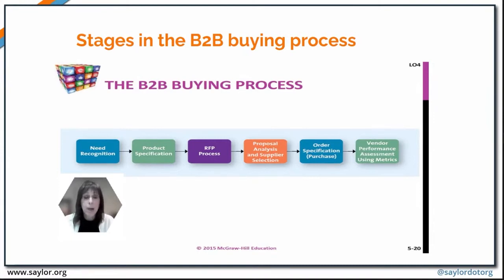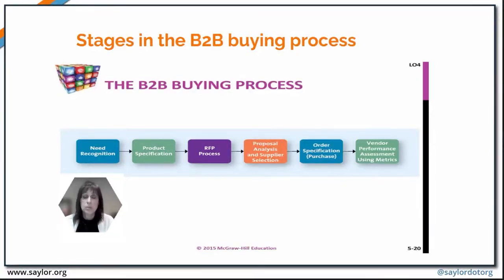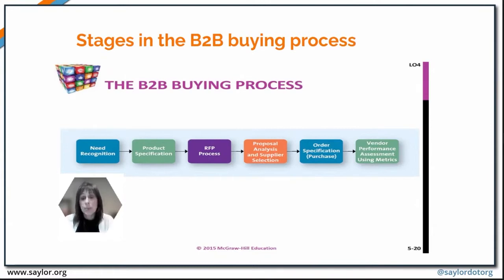A company will then look at potential suppliers, which results in an RFP — Request for Proposal — process. When a company is getting ready to make a purchase, they go to different potential suppliers and ask them for a proposal on what the company is looking to buy. Once that happens, the proposals are analyzed — much like evaluating choices in the consumer process — a supplier is selected, though the decision criteria vary significantly from a consumer process. The next stage is to make the order, specify the requirements, make the purchase, and then evaluate the performance of that purchase, very often using complex metrics.